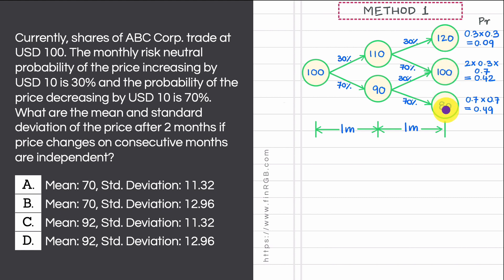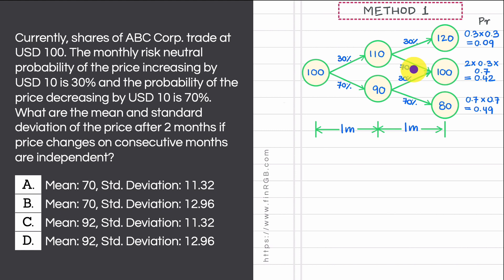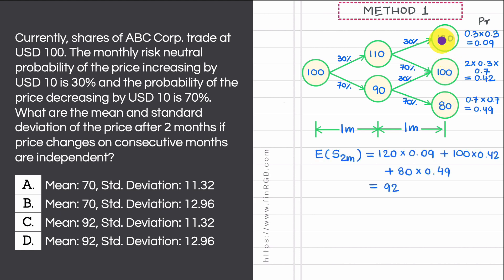The three probabilities must sum to 1, so the probability of S2m taking the value 100 is 1 − 0.09 − 0.49 = 0.42. This can also be verified as (0.3 × 0.7) + (0.7 × 0.3) = 0.42. Taking the probability-weighted average of the three prices gives us 92 as the expected value of S2m.